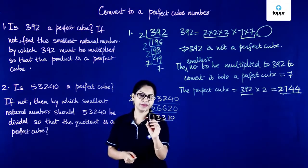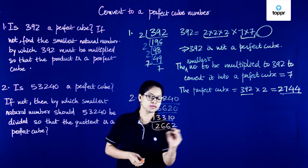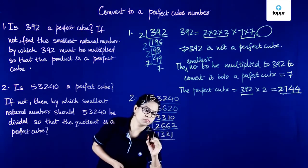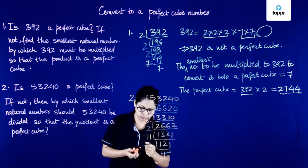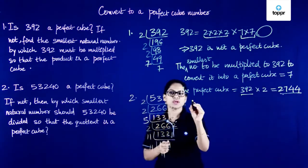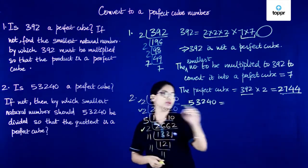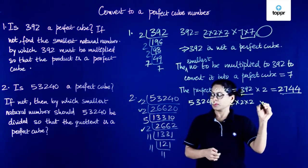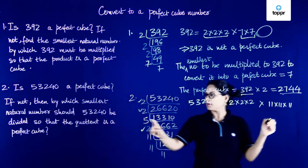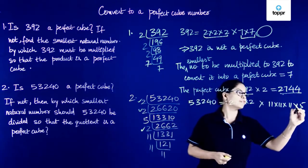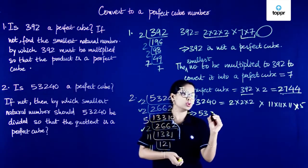Dividing by 5, then dividing by 5 again, we get the prime factors of 53,240. We can write 53,240 as a product of its prime factors — there are three 2's and three 11's, but there is just one 5. So 5 is a prime factor that is not in a triplet, which means the given number is not a perfect cube.